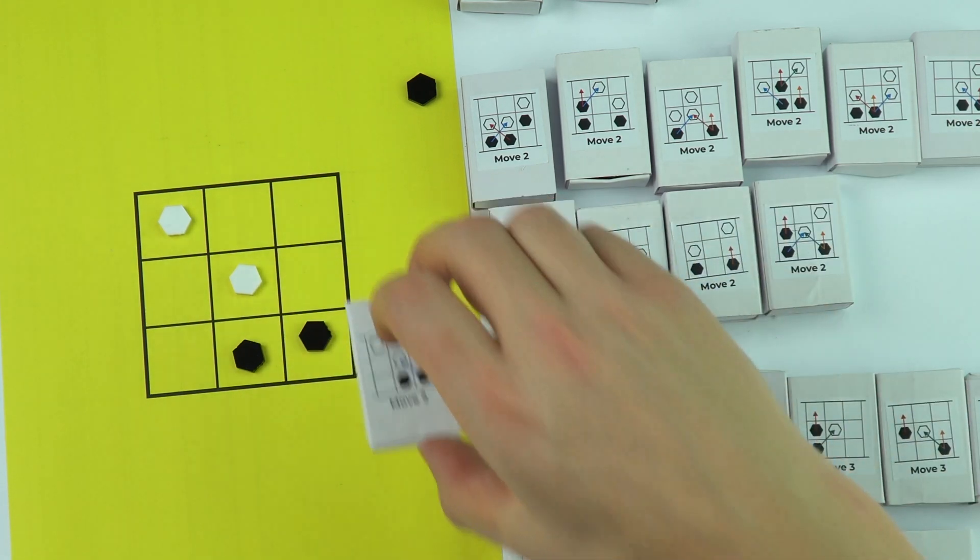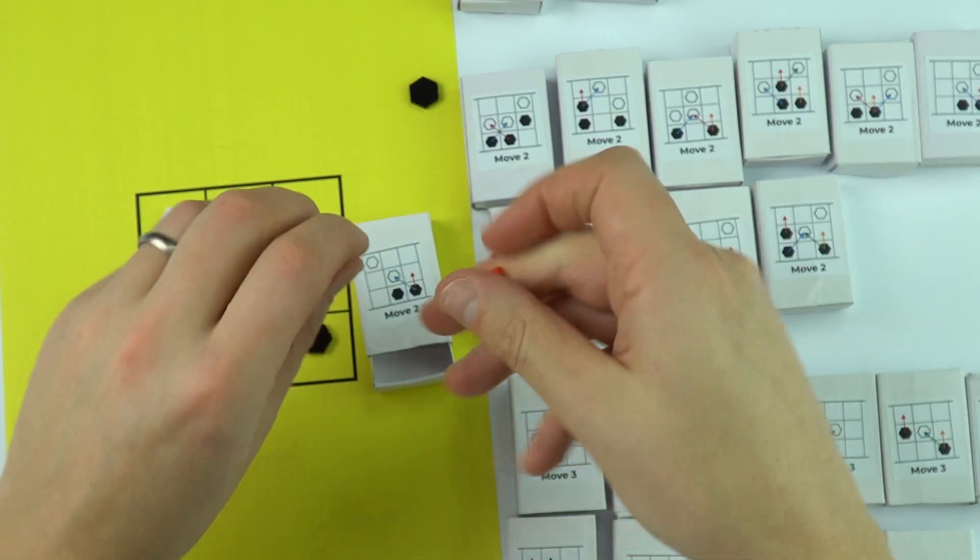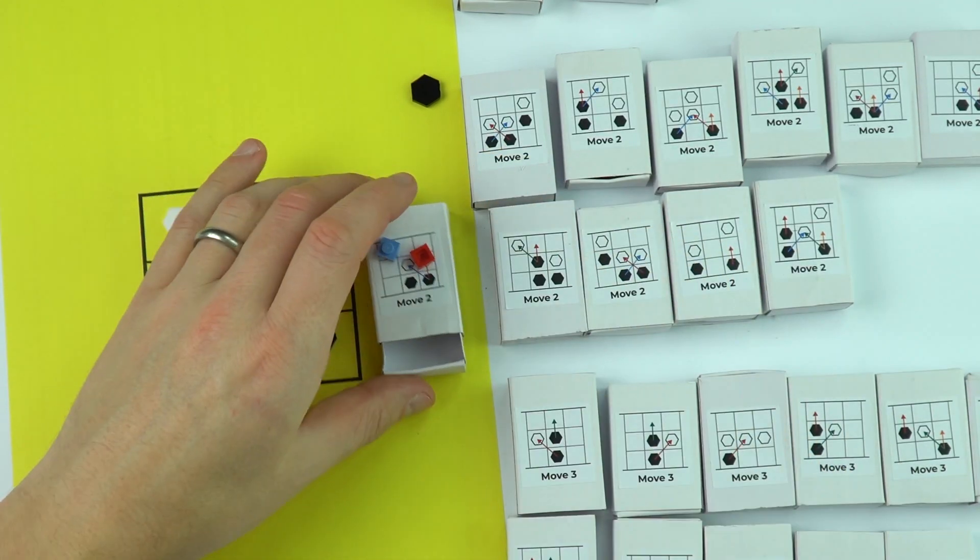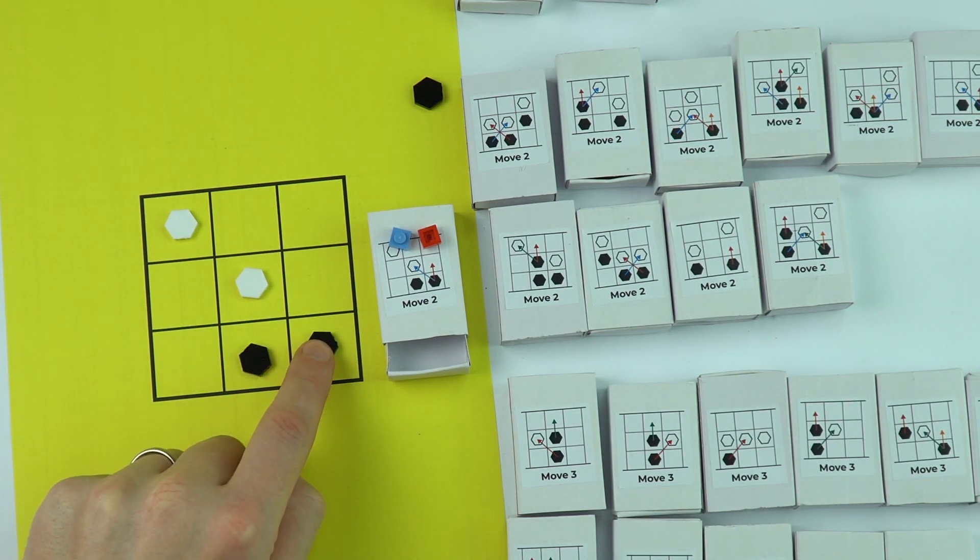This one over here, there are two options. We've got the red and the blue tokens once more. I'll just put these on top. Let's think about what might happen.